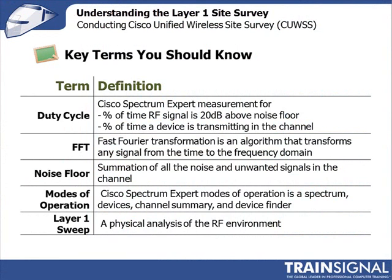Some key terms to be familiar with: Duty cycle — Cisco defines duty cycle as a way of indicating how much the channel or bandwidth is being utilized. It measures duty cycle in two ways: the percentage of time the RF signal is 20 dB above the noise floor, and the percentage of time a transmission from a specific device is present in the channel or band.